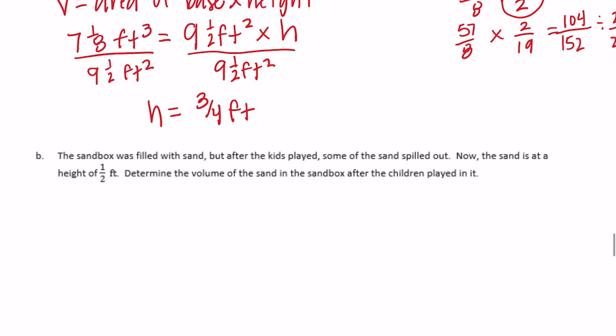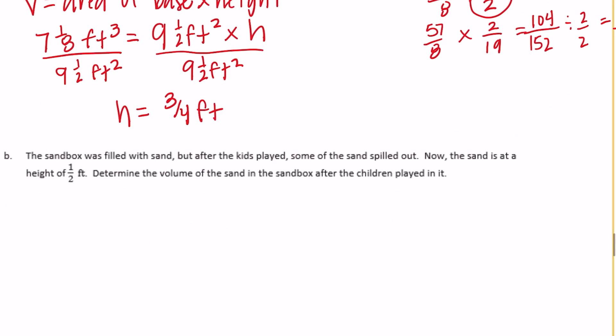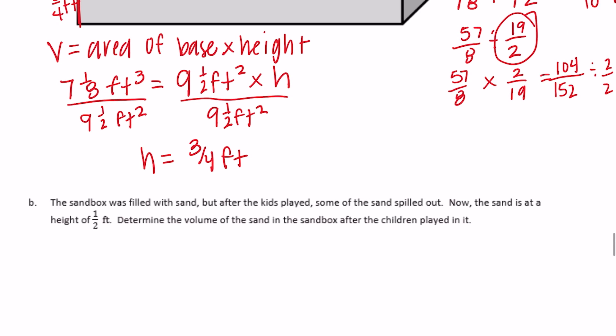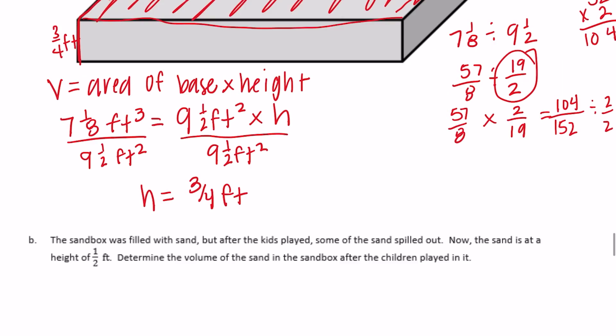Part B: the sandbox was filled with sand, but after the kids played, some of the sand spilled out. Now the sand is at a height of half a foot. Determine the volume of the sand after the children played. So instead of being at 3/4 like the height we just figured out, it's now at a half.